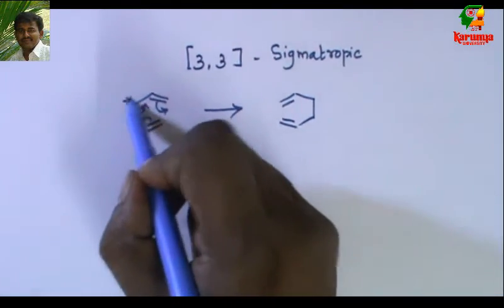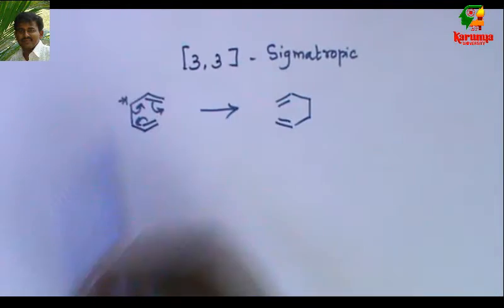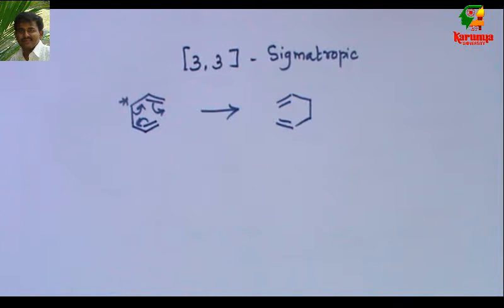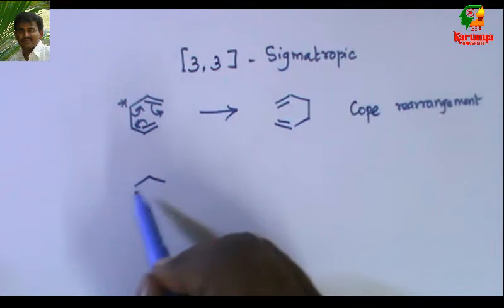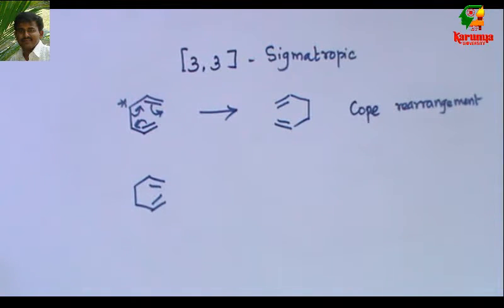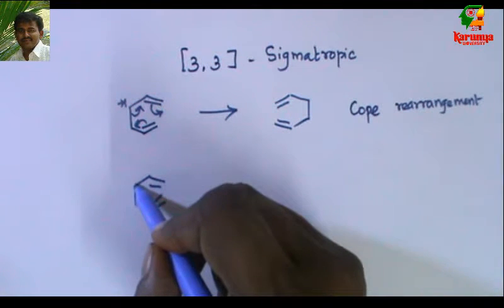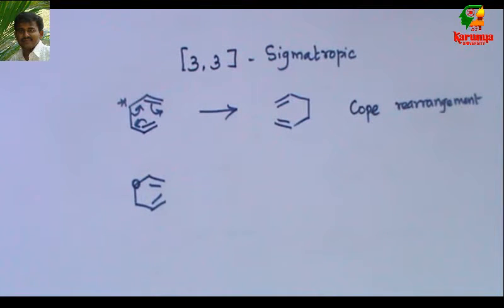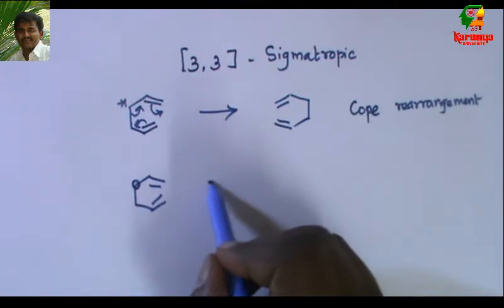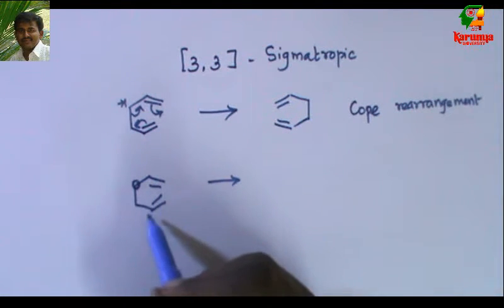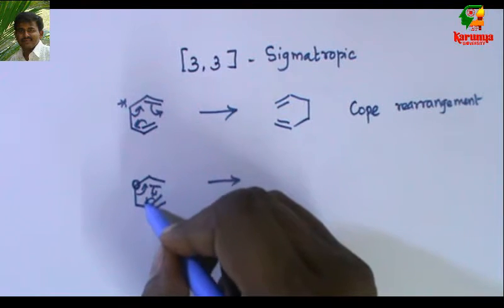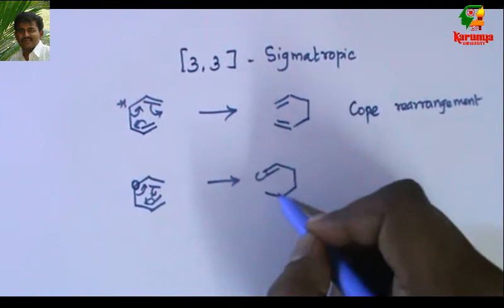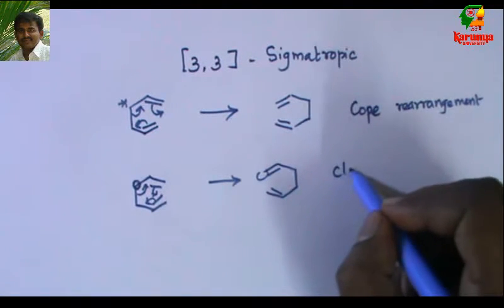If you introduce some group on a carbon, it will be different — that is a non-degenerate cope rearrangement. This was modified by Claisen: in the 1,5-diene, he introduced an oxygen atom, so the starting material is an allyl vinyl ether. It undergoes a similar 3,3-sigmatropic rearrangement to give a product — this is called Claisen rearrangement.